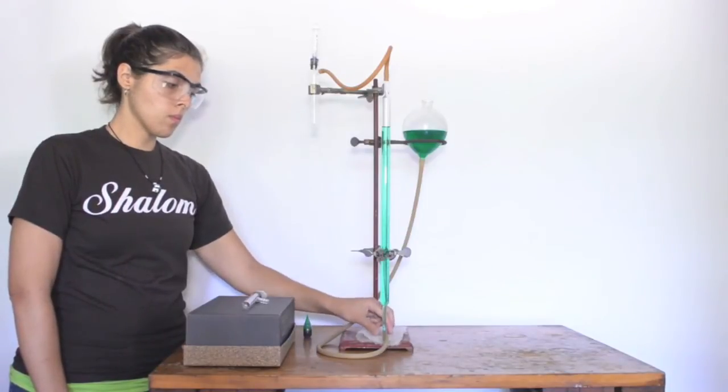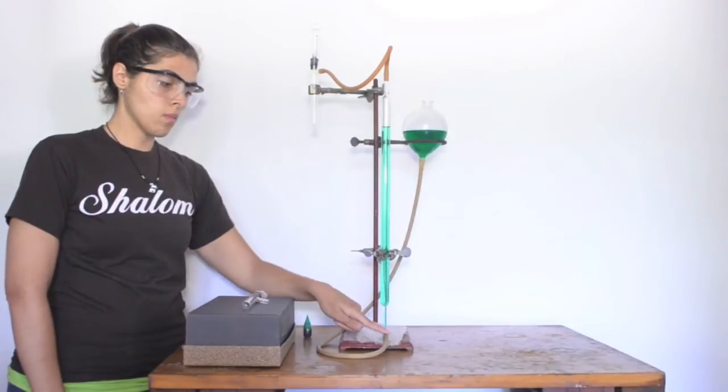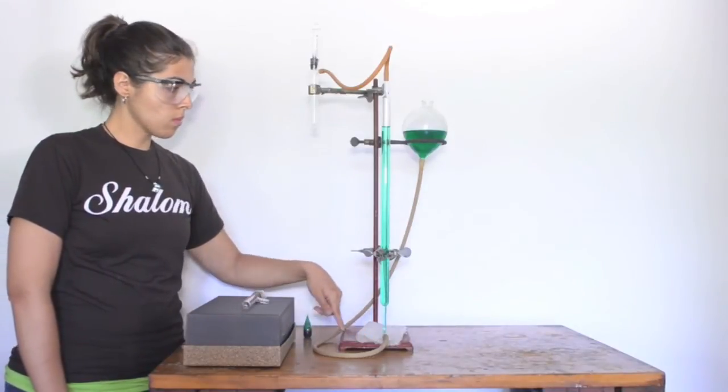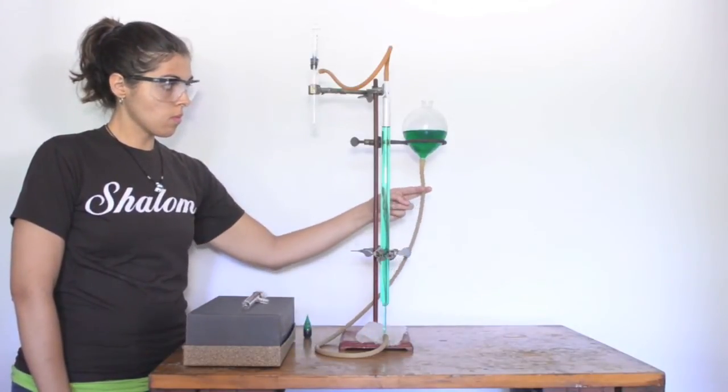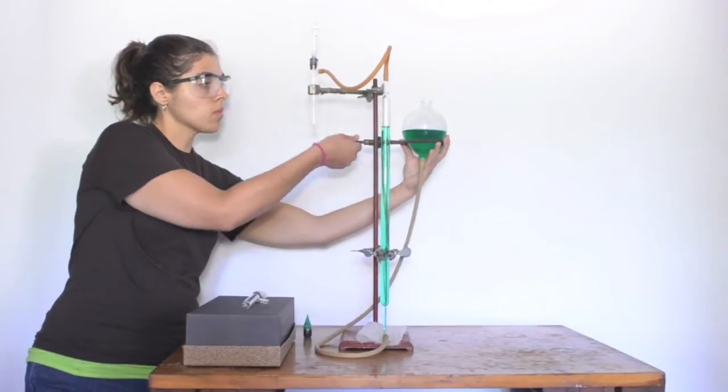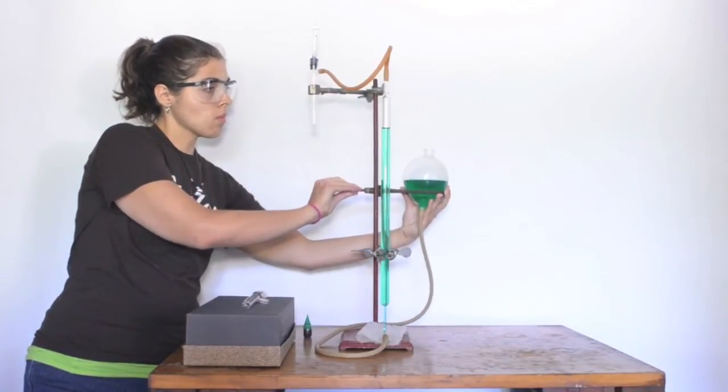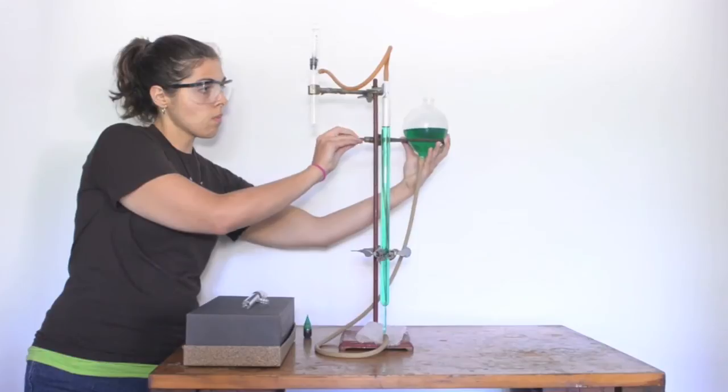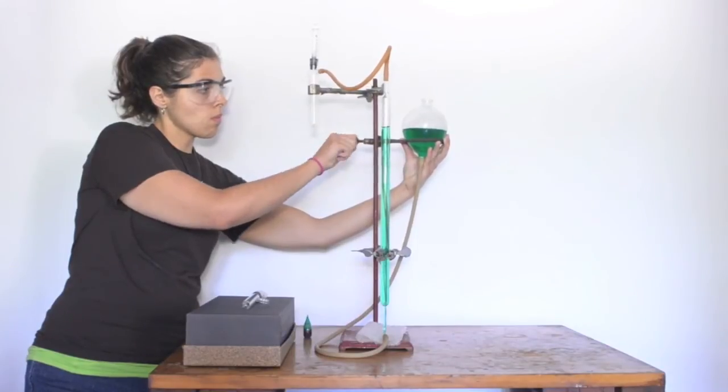Coming from the bottom of the burette is a long piece of tubing leading to a leveling bulb. The role of the leveling bulb is to level out the pressure inside and outside the gas apparatus. Or said another way, the bulb helps equalize the gas pressure.